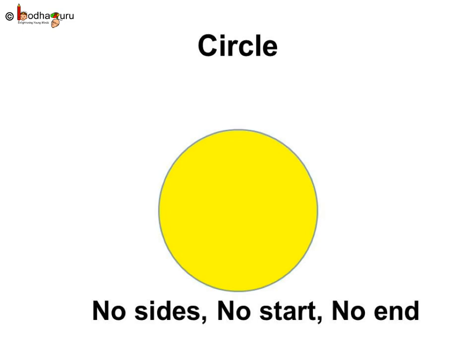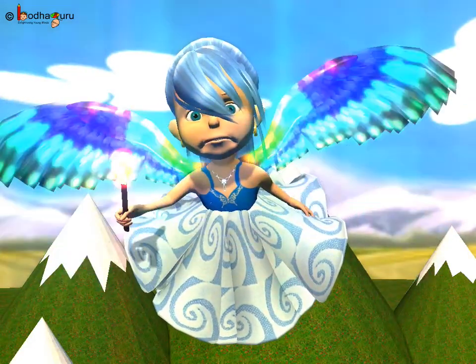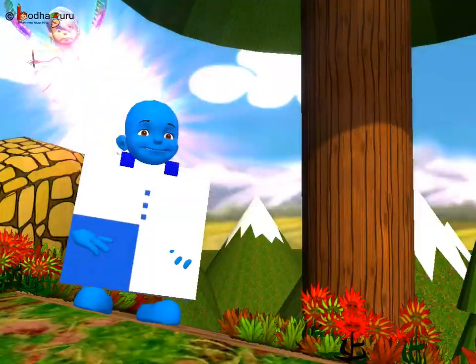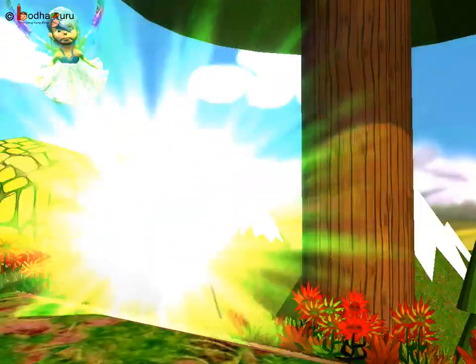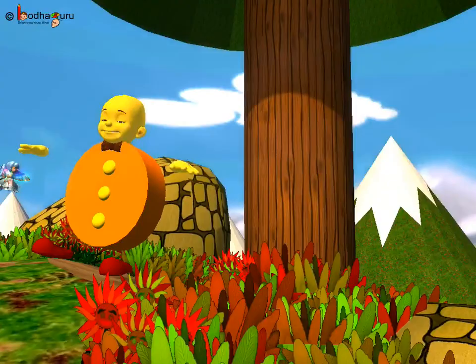A circle has no start, no end. A circle is round in shape with no corners or sides. So, a circle can roll easily. Remember, when Squary started coming down, due to his round shape, he started rolling down the hill.